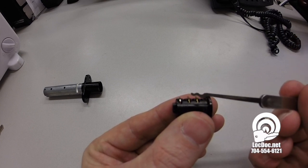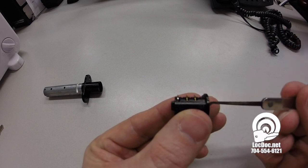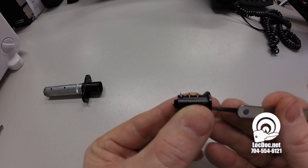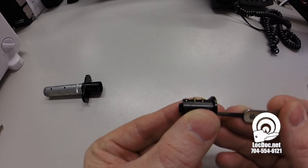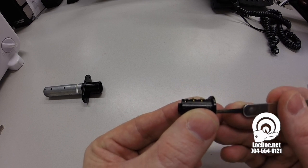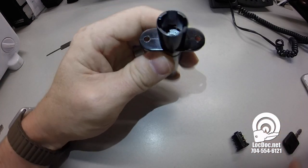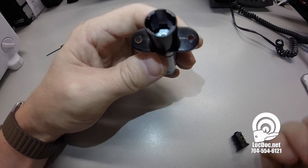By utilizing the pick, we can slide that inside and then push that wafer down. So that's all we're doing is pushing that wafer down and allowing that plug to slide right out. As you can see here inside the cabinet lock, there are a couple of different grooves.